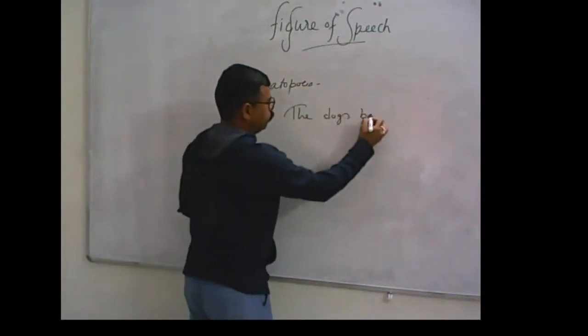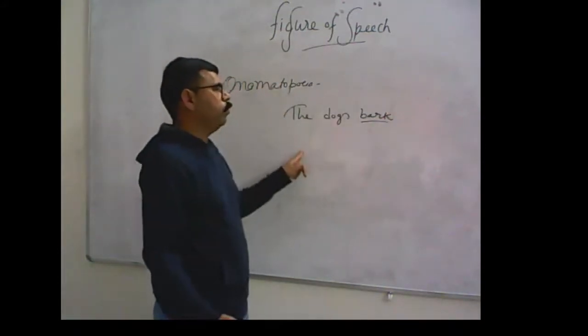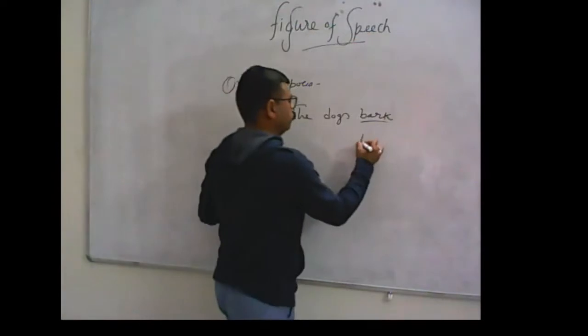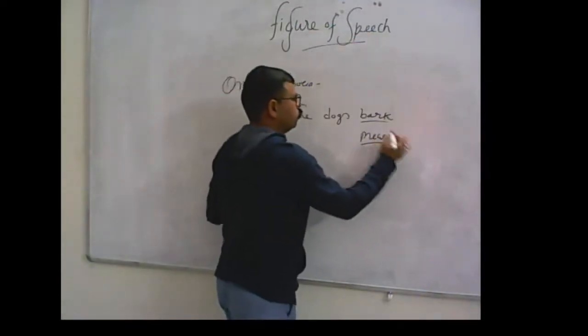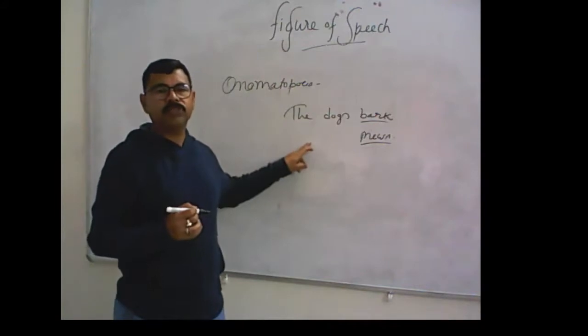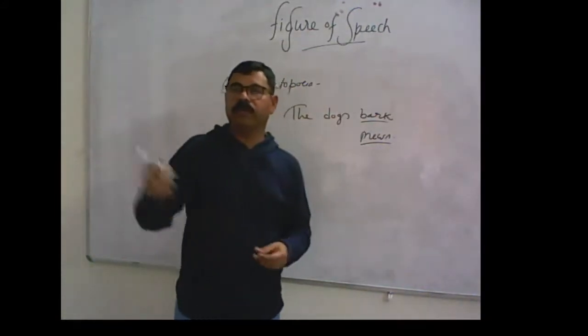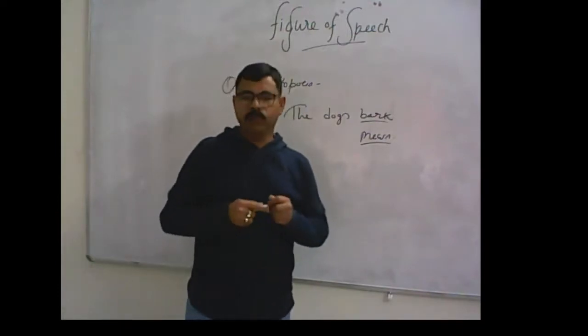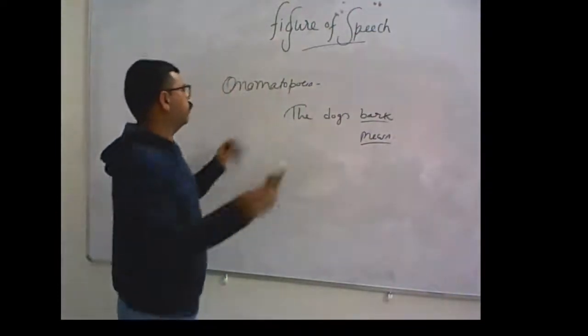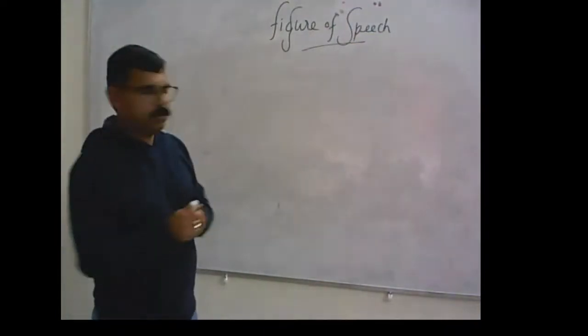For example, the dogs bark. Bark is the example of meow, meow, that is the example a cat is present there. Roaring, that is the sound of a tiger in a zoo. This is the example of onomatopoeia.